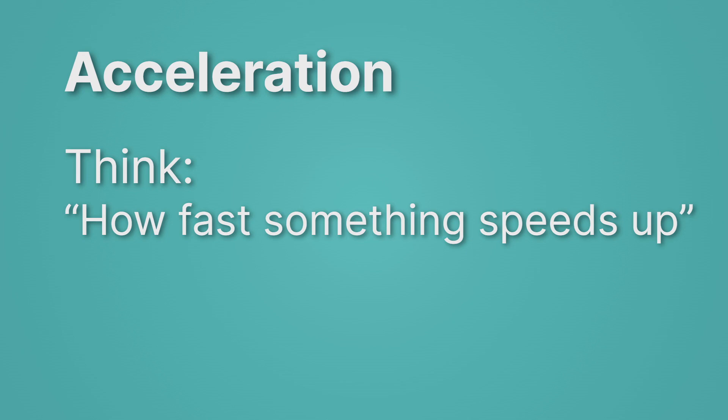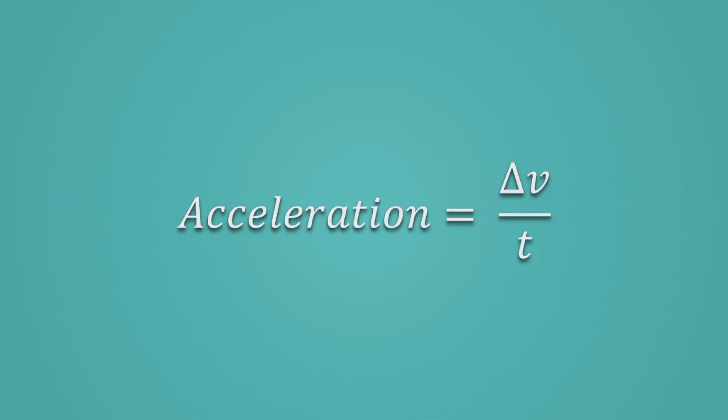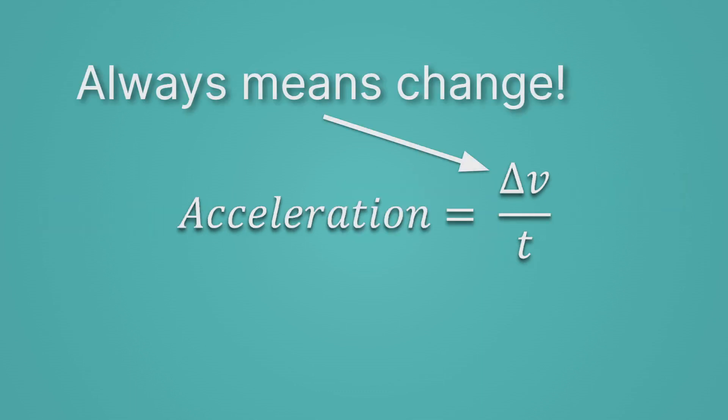Mathematically, we can think about acceleration as being the change in velocity over time. We'll write that change in velocity a little differently — we'll use this weird little triangle thing here. Whenever you see that in this class, it always means change. It's actually the Greek letter delta, and it just means change. So we take that change in velocity and we divide by time.